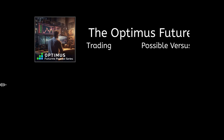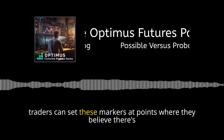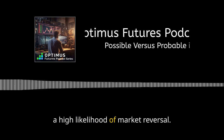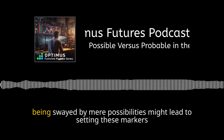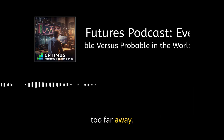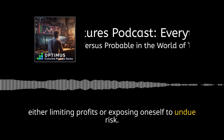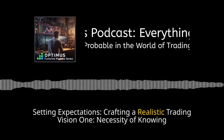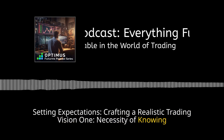By honing in on probable price movements, traders can set stop loss and take profit markers at points where they believe there's a high likelihood of market reversal. Conversely, being swayed by mere possibilities might lead to setting these markers too far away — either limiting profits or exposing oneself to undue risk.